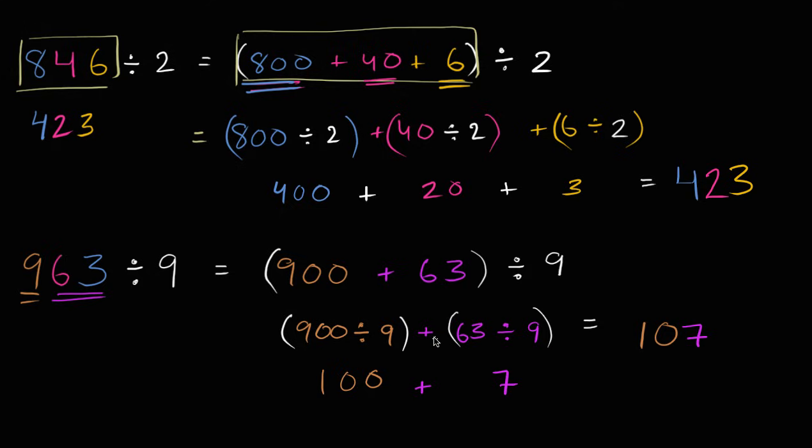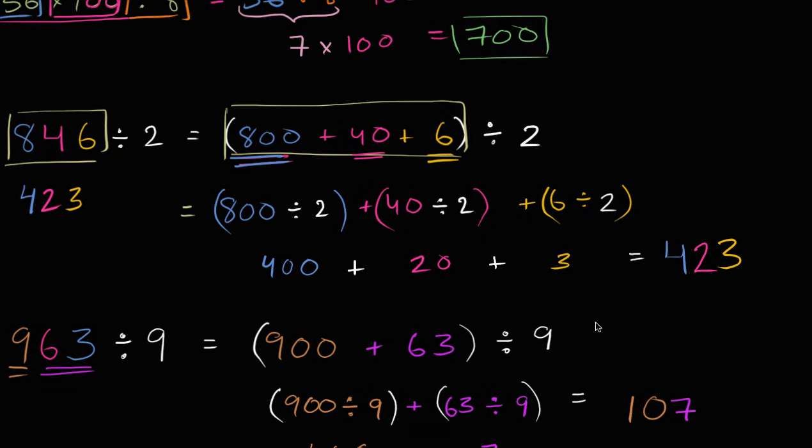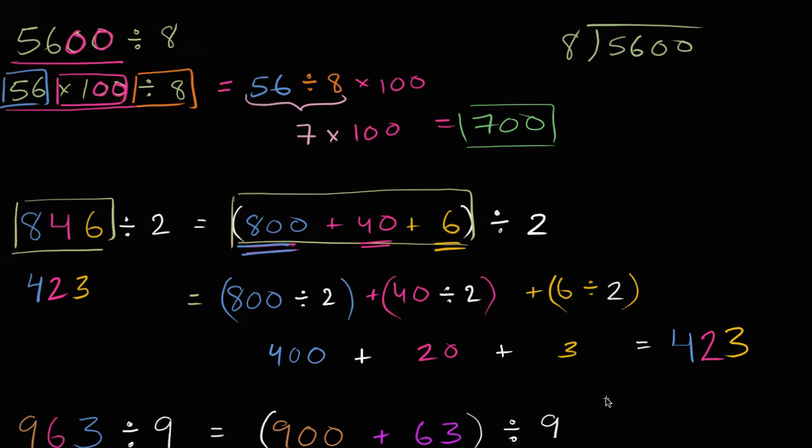And so, once again, I wrote it all out like this, but once you get some practice, you'll say, hey, look, 9 goes into 900 a hundred times, 9 goes into 63 seven times, so 9 goes into 963, 107 times. Hopefully, you found that fun. And this is useful stuff because one of the most important things you're going to have to find, you're going to find these numbers while you're doing your finances or you're trying to calculate the check at a restaurant, and you're going to find it really valuable to be able to do this type of division, and with some practice even without paper.